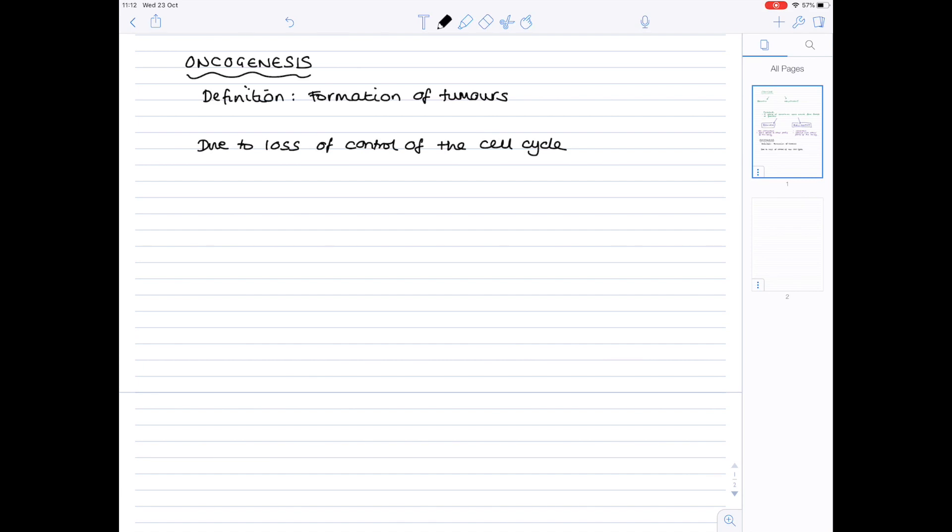How does this loss of control occur? As always, it's due to mutation in the genes involved in the control of the cell cycle. We're looking at mutation in genes known as oncogenes. This loss of control of the cell cycle is brought about by mutation in genes involved in the control of the cell cycle. These genes are known as oncogenes, so we're really looking at mutations in these.